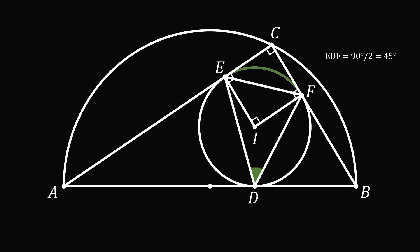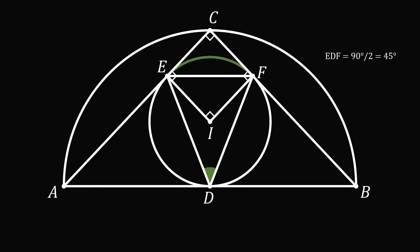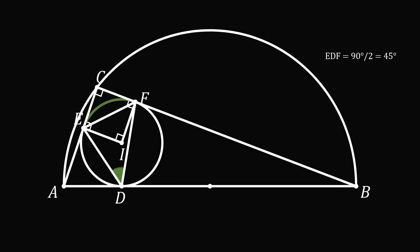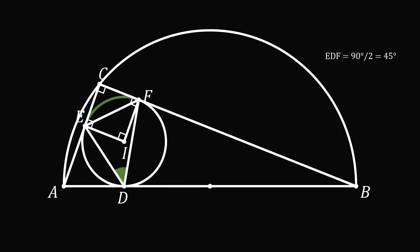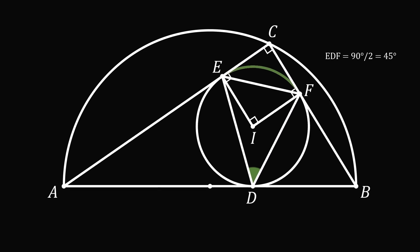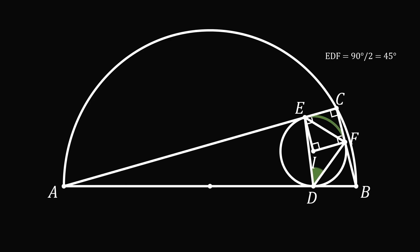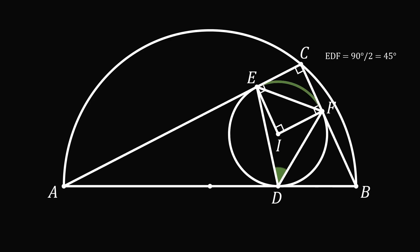What's amazing about this problem is it will always be equal to 45 degrees, no matter how this point C is picked along the arc of the semicircle. What an interesting question!